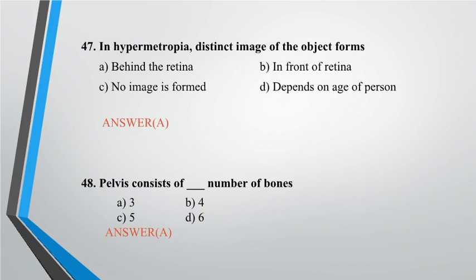Question 48: Pelvis consists of number of bones — A. 3, B. 4, C. 5, D. 6. Answer: A.